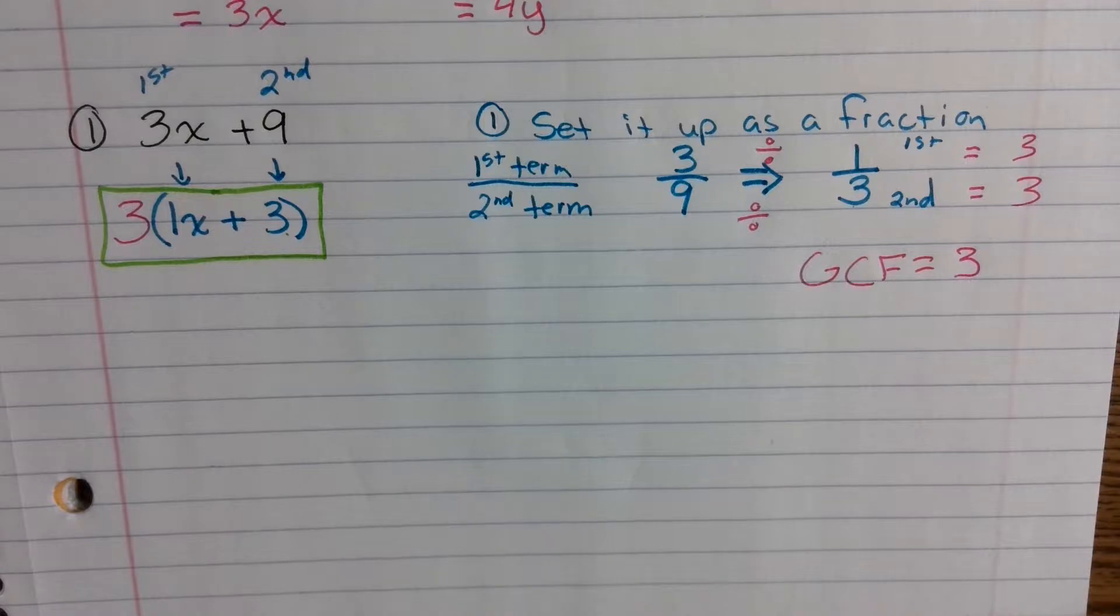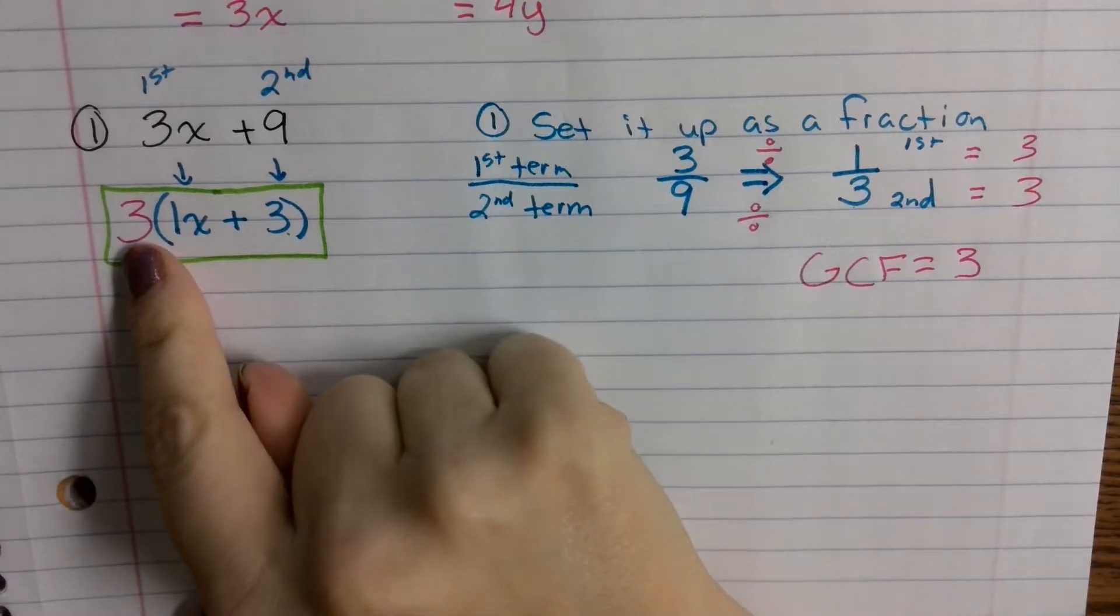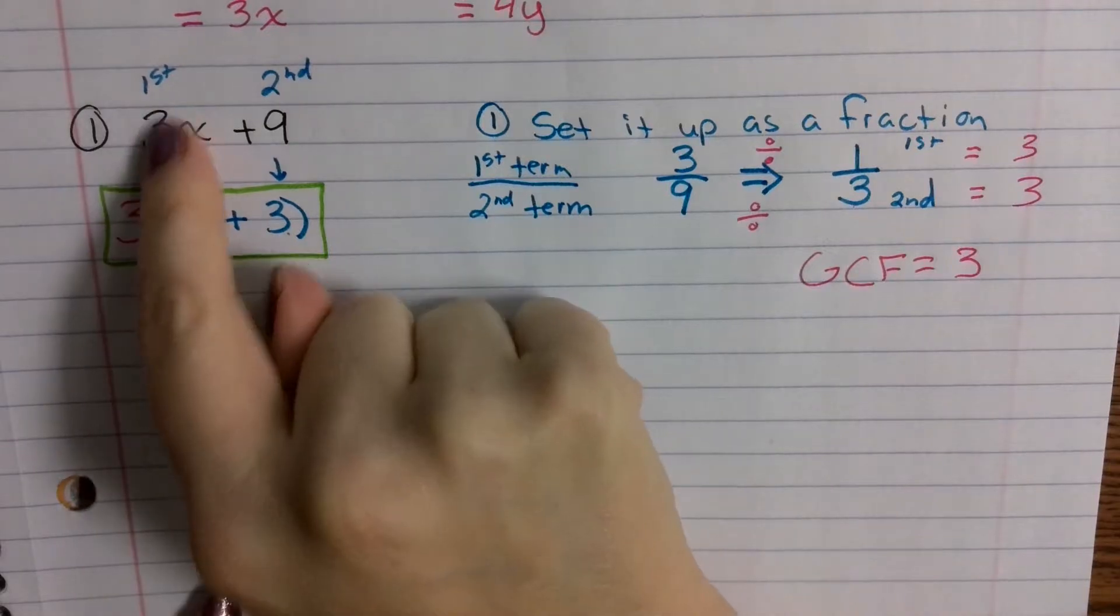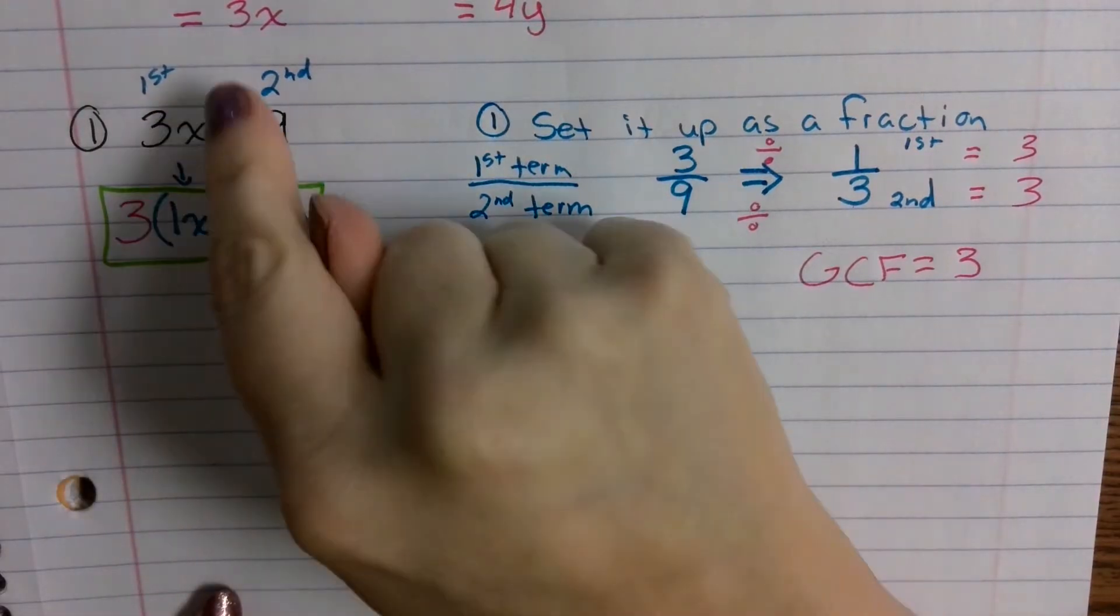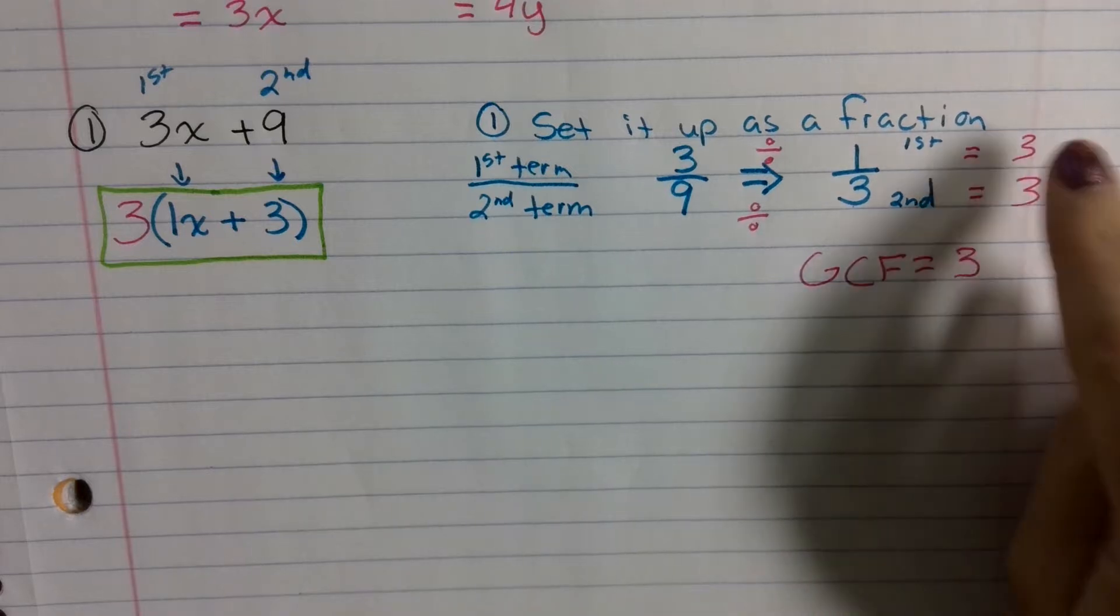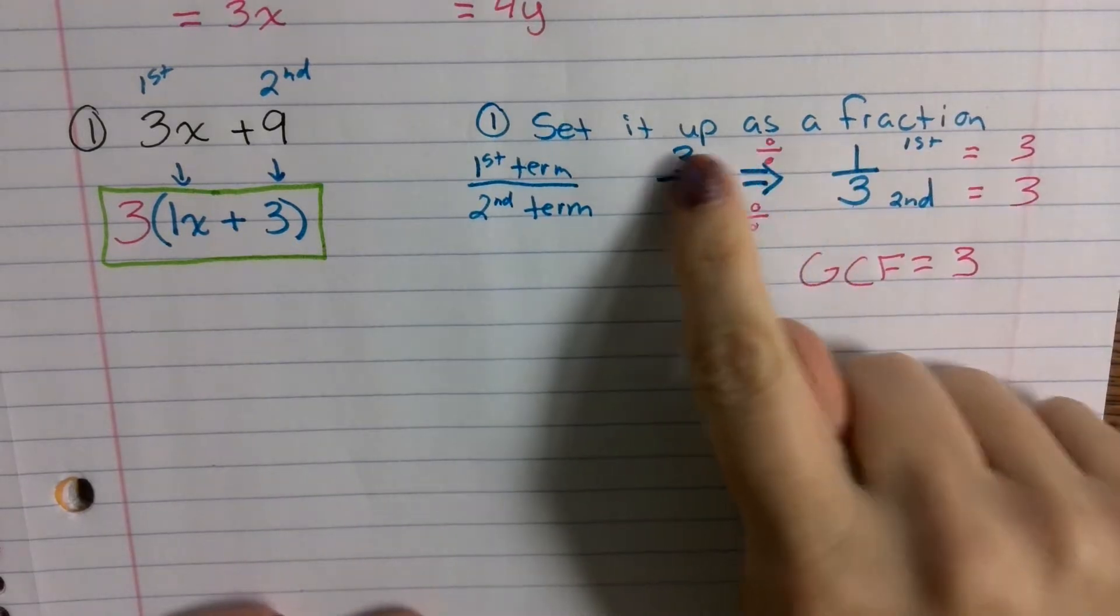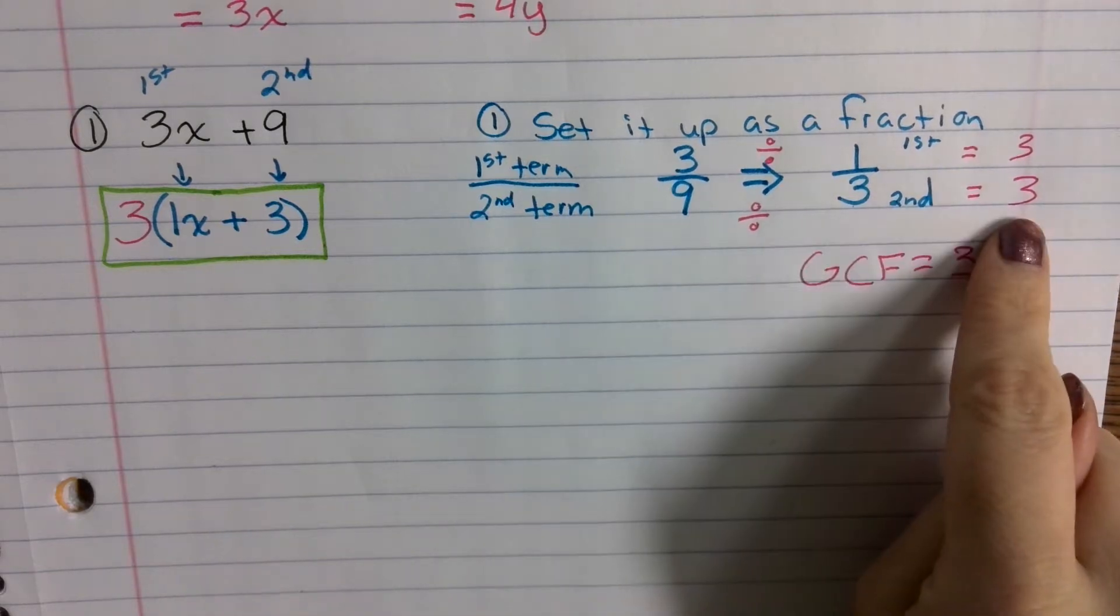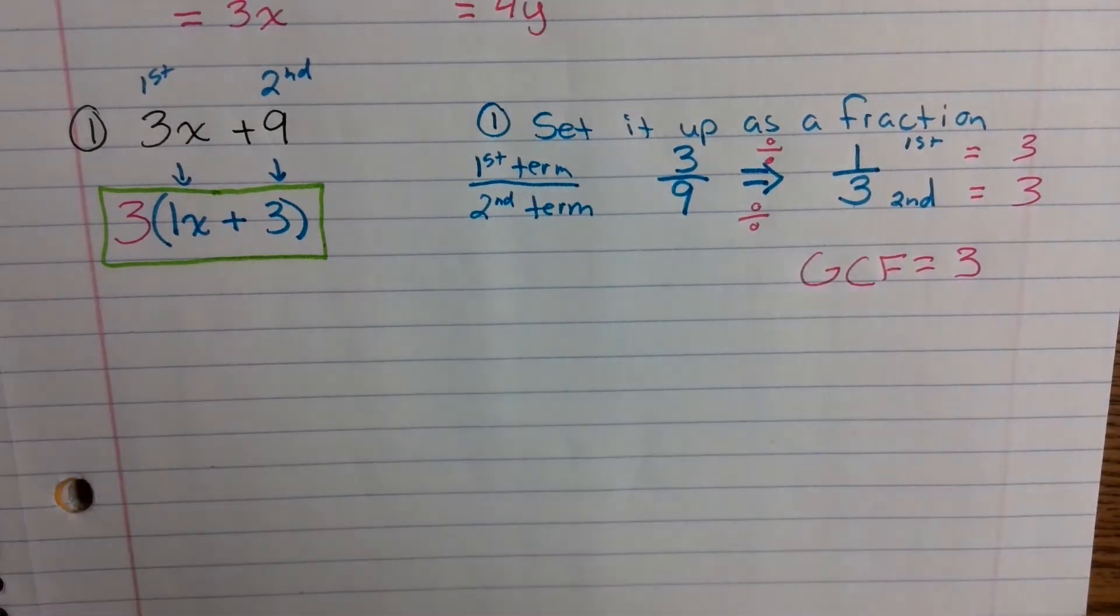And if you were to go ahead and do distributive property to check it, what's 3 times 1? 3x. What's 3 times 3? 9. It should be. Because it'll be the same number. So whatever your numerators divide to equal, your denominator should be the same. Because it has to be the same that you're simplifying both of them by.